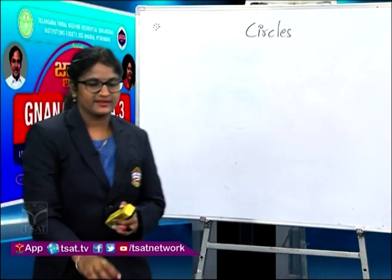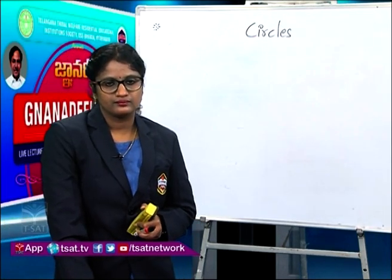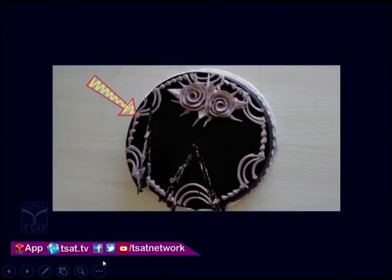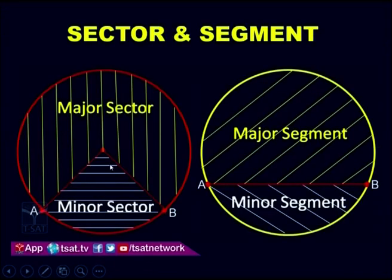Now look at this slide. The region enclosed between two radii and the minor arc is called the minor sector; between two radii and the major arc is the major sector. The region enclosed between the chord and minor arc is the minor segment; between the chord and the major arc is the major segment.